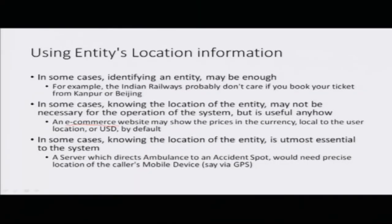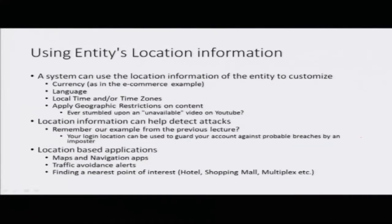In some cases the location of the entity is actually utmost essential for the system to work. For example, a system which alerts ambulances to go to the location of accidents absolutely requires knowing the entity's location. You can also use location to determine what time to show — for example, showing IST to a user from India even if the server time is GMT. Geographic restriction on content is another use — you may have seen the 'unavailable content' message on YouTube because a video is not available for your geographic location.